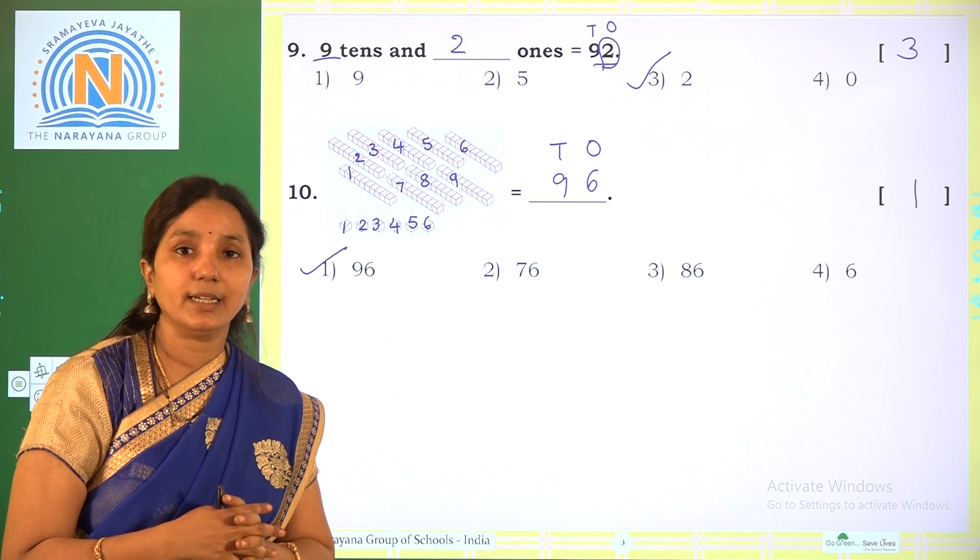Next one. 9 tens and blank ones make equal to 92. So 9 tens and blank ones equals 92. How many tens are there? 9 tens are already given. How many ones are missing? The number is already given as 92, so there are 2 ones. The options are 9, 5, 2, 0. The required option is 3.